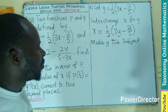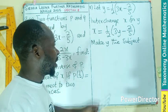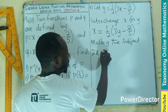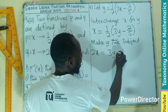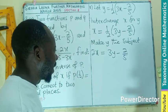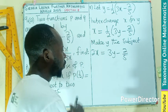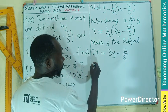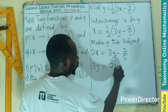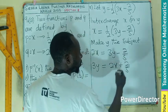In making Y the subject, we first need to eliminate all fractions. So you multiply through by two, which is the LCM here, making your two X equals to three Y minus two-fifths. I need the Y, so I am transposing the negative two.